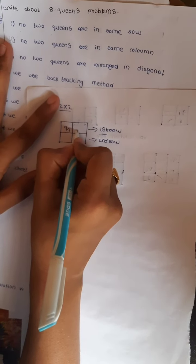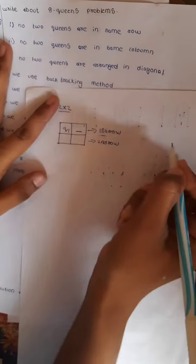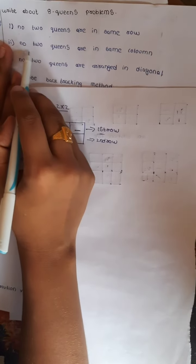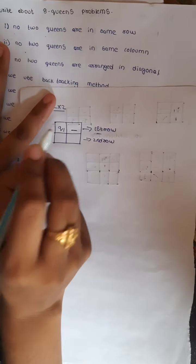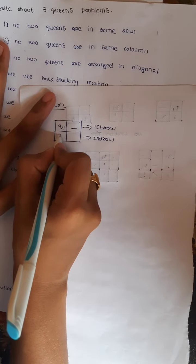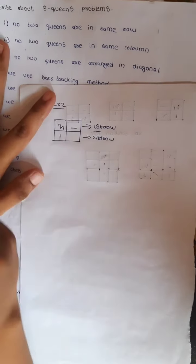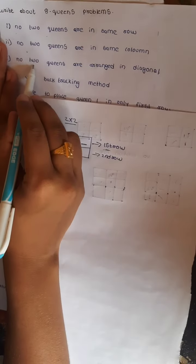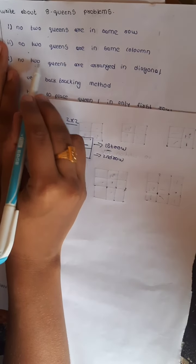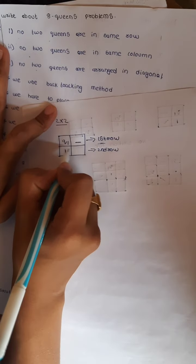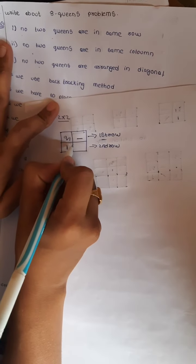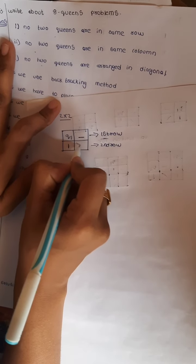We do not place Queen 2 in this box. The 2nd rule is: no 2 Queens are in the same column — we are not going to place Queen 2 in this place. The 3rd rule is: no 2 Queens are arranged diagonally — we are not going to place Queen 2 in this box either.